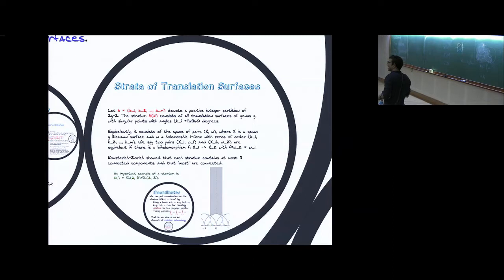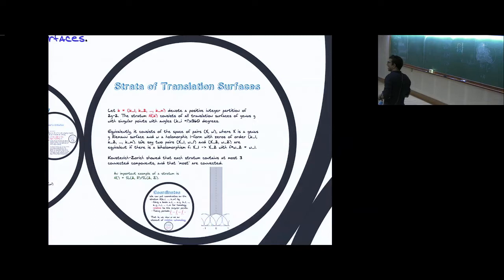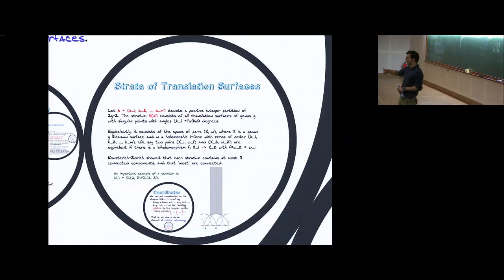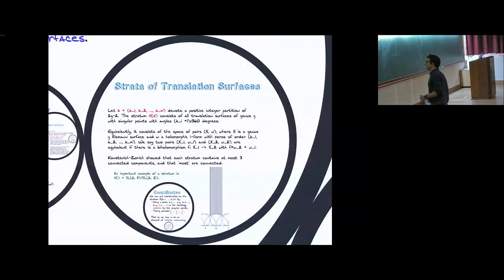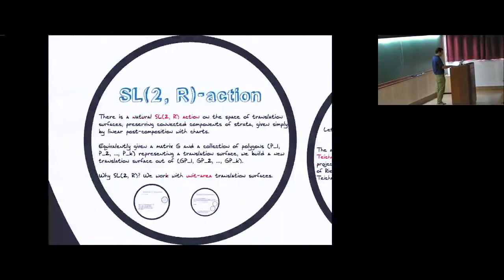An example of a stratum: if I take no singularities, I have the space of holomorphic one-forms on a flat torus. I just need to write the flat torus as C mod a lattice, and I take C mod a lattice, dz — so I have to pick a lattice. To pick a lattice in C or in R^2, normalizing things to have area 1, that means picking something in SL2R, and then the integer lattice Z^2 is stabilized by SL2Z, so it's SL2R mod SL2Z. This is a picture of a slice of a stratum.